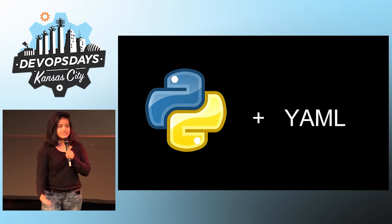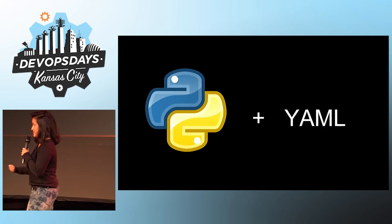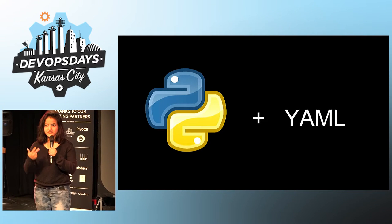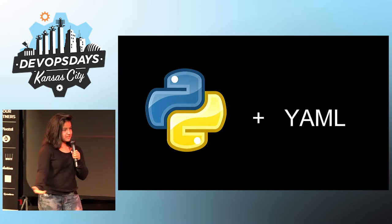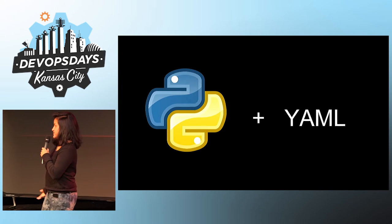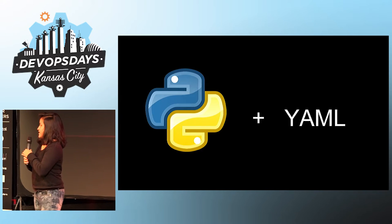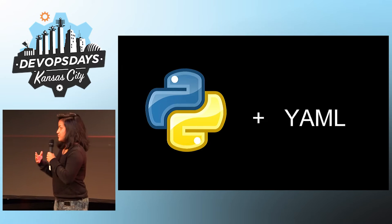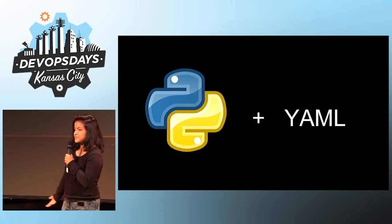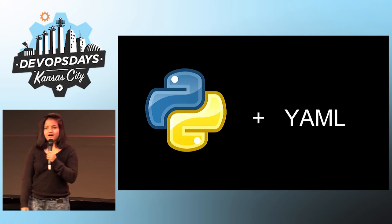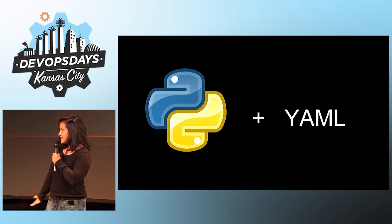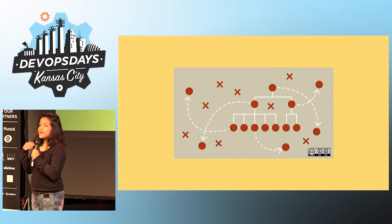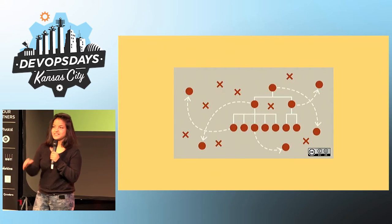What makes Ansible so simple and powerful to use is that it's written in Python. So if you want to create your own functionality for Ansible and develop your own module, Python is a really simple and powerful language, which makes it convenient to develop modules. With YAML syntax, which is what you write Ansible playbooks in, it's really simple to start creating playbooks right away. When you look at YAML syntax, it almost looks like pseudocode — you can tell right away what it's doing.